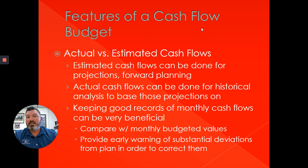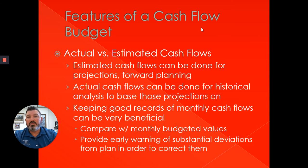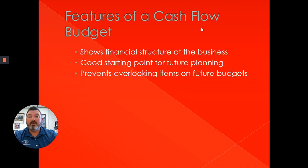We're going to talk about actual versus estimated cash flows. Estimated cash flows allow projections and forward planning, while actual cash flows are for historical analysis. You can go back and look at prior years to see when bills came due for fertilizer or insecticide, then project on your cash flow budget when you might need cash for those things. Make sure to keep good records. Compare monthly budgeted values, and hopefully you'll get an early warning of deviations from the plan so you can correct them if need be. It also shows a financial structure for the business and is a good starting point for future planning.